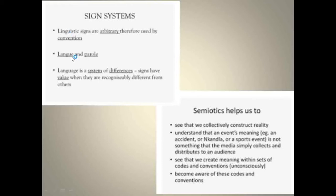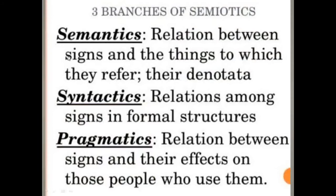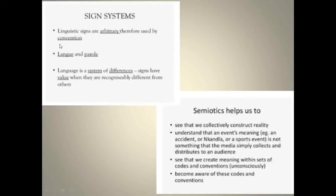We also saw language as langue — as in the system of signs used by a certain community of people — and how those people are aware of all of its functionalities and the structures within it, so that they could successfully use it to make a reasonable and understandable conversational discourse. And how parole was the individual performance of each person within that langue. We understood language as a system of differences — how signs find value only when they are recognizably different from each other.